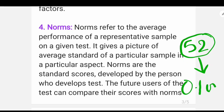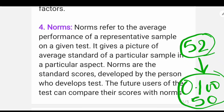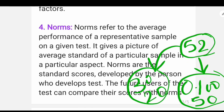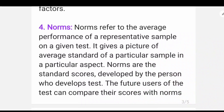If the average score is around 50 to 52, then it is considered as normal. However, if the average is very low — like 30 or 20 — then it indicates the test may not be standardized. So norms refer to the average performance of a representative sample on a given test.